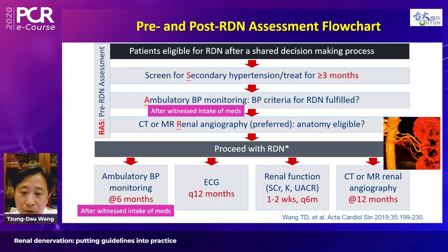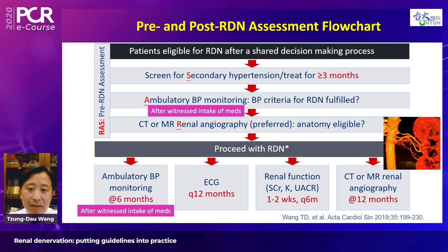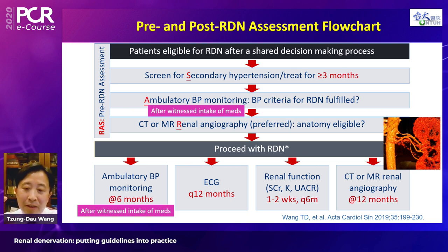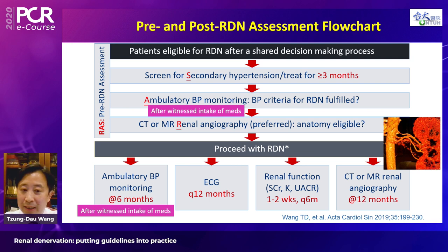Moving to the second purpose — the pre-renal denervation assessment — we created another acronym: RAS. This stands for Renal artery angiography, Ambulatory blood pressure assessment, and Secondary hypertension causes identification.